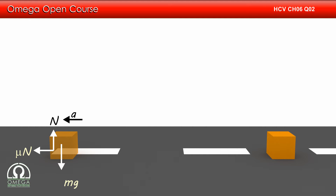Let us assume the acceleration of the block to be A. Since there is no motion in the vertical direction, normal reaction must be equal to the gravitational force, that is, N is equal to mg.